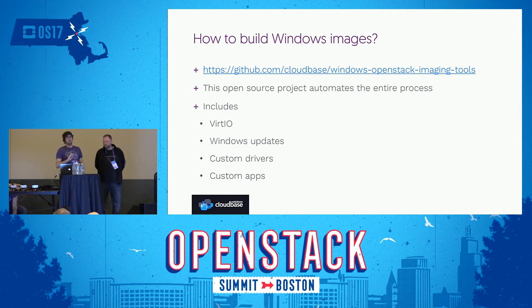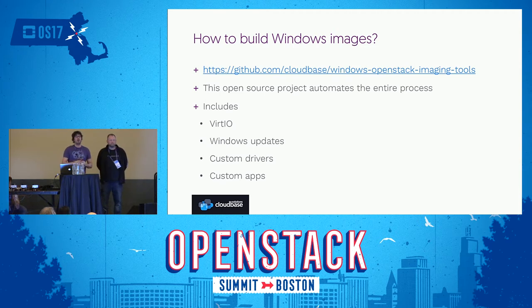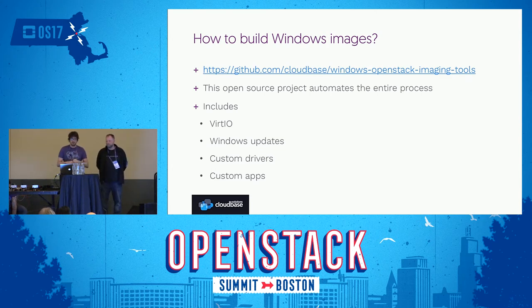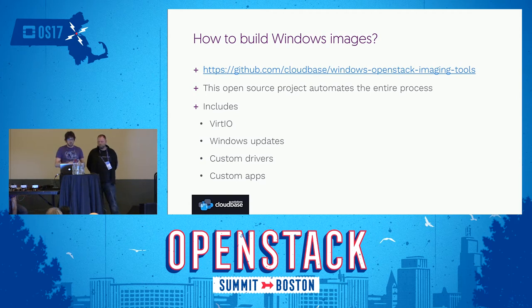How do you build Windows images? Windows instances can run on every possible hypervisor — not only Hyper-V. Most people ask about KVM, which is the most popular platform for OpenStack, but it also works on VMware, Xen Server, and so on. Here are tools we keep updating, with a lot of updates in the last cycle including Nano Server support. You can run tools that generate images for you — they generate an offline Windows image, run it in a Windows machine to apply all Windows updates, plus additional scripts. This includes VirtIO or VMware tools, whatever drivers you need, Windows updates, custom drivers, and custom applications.